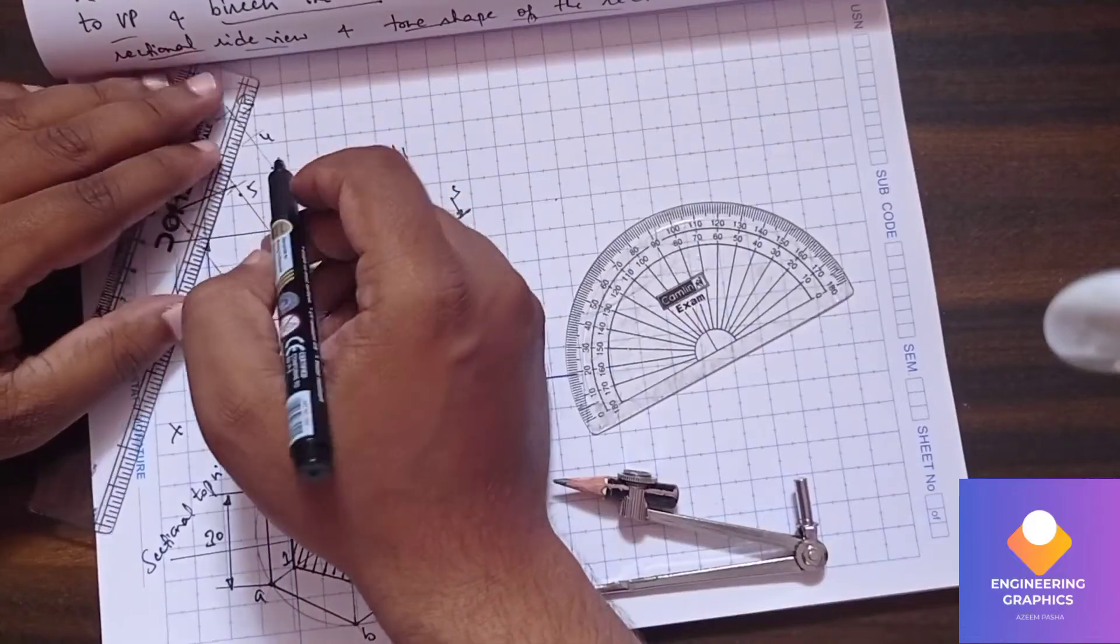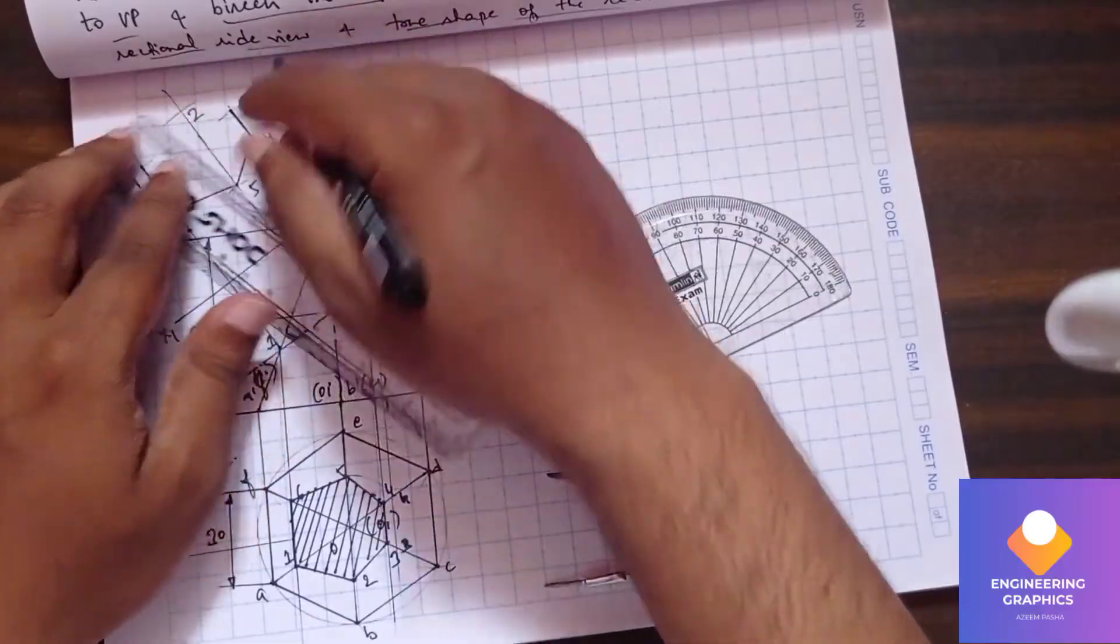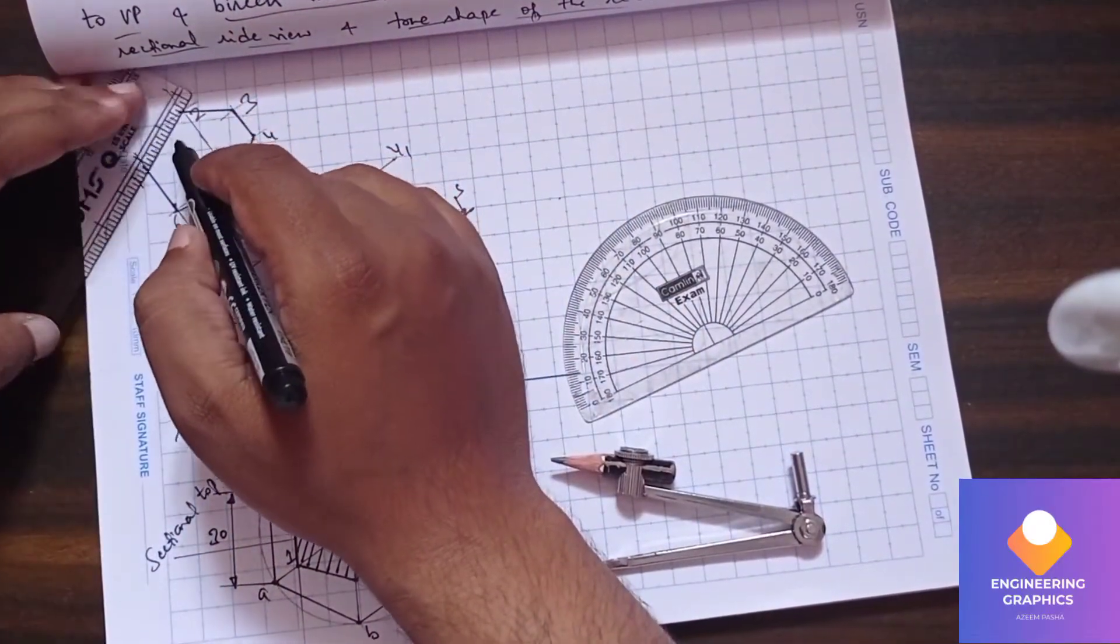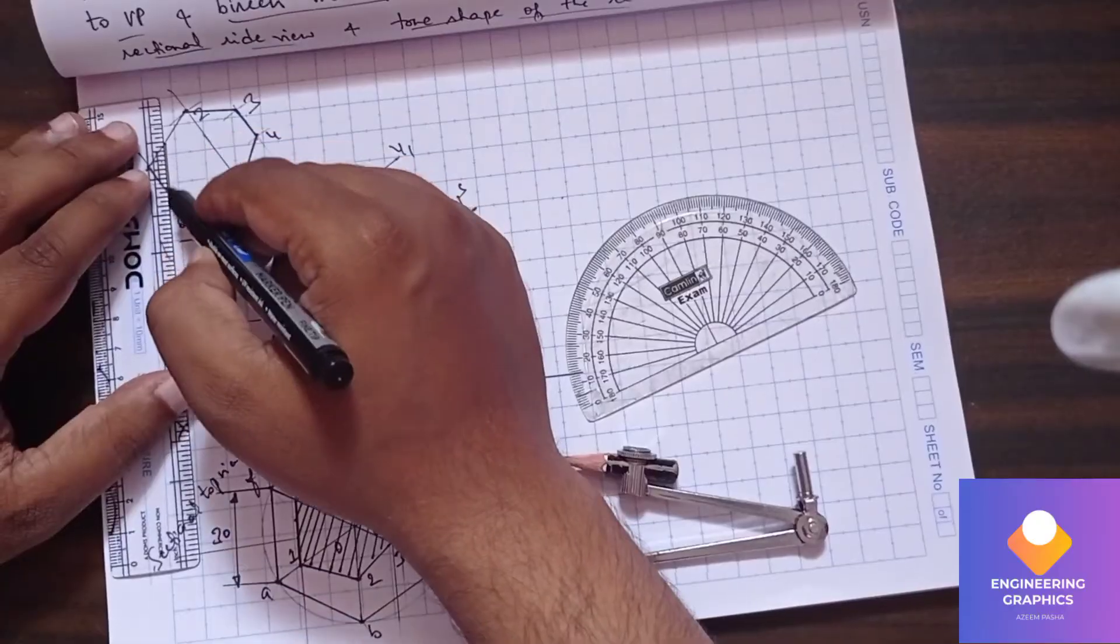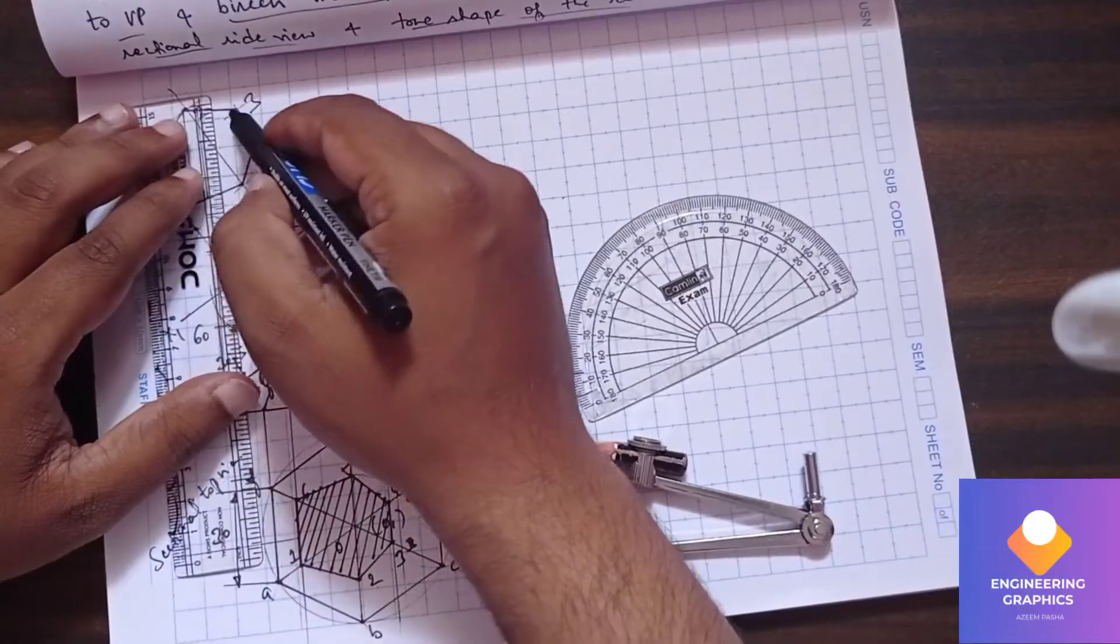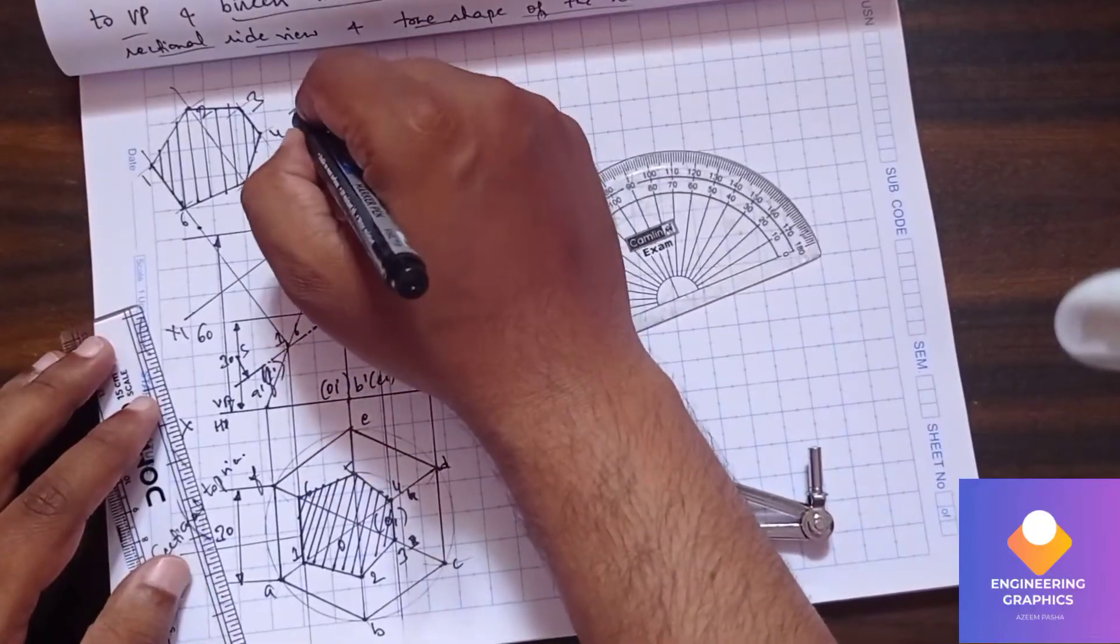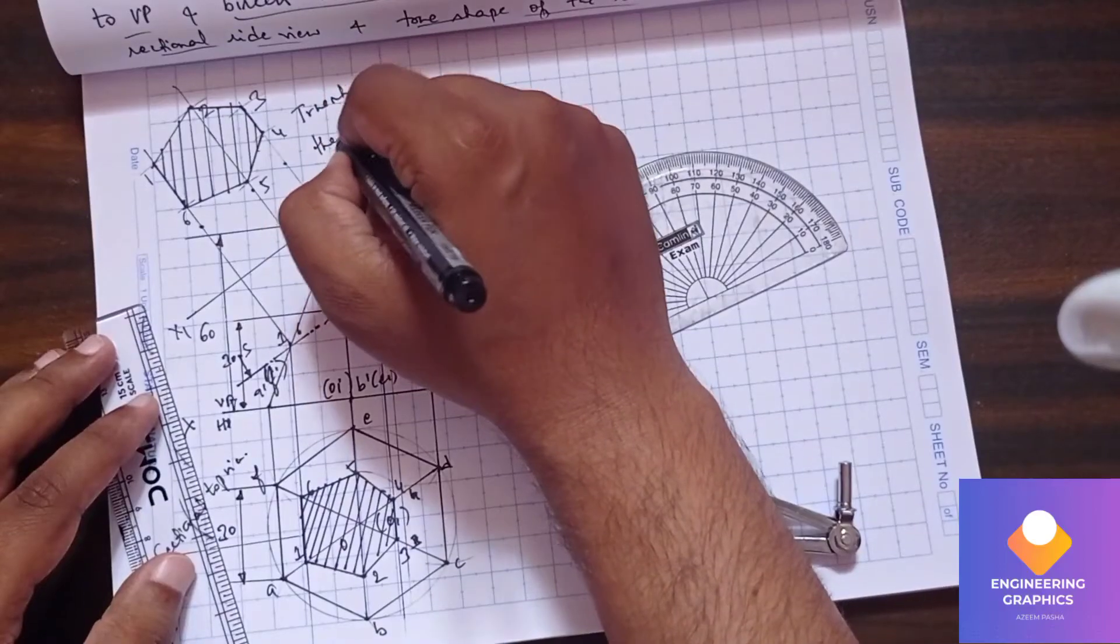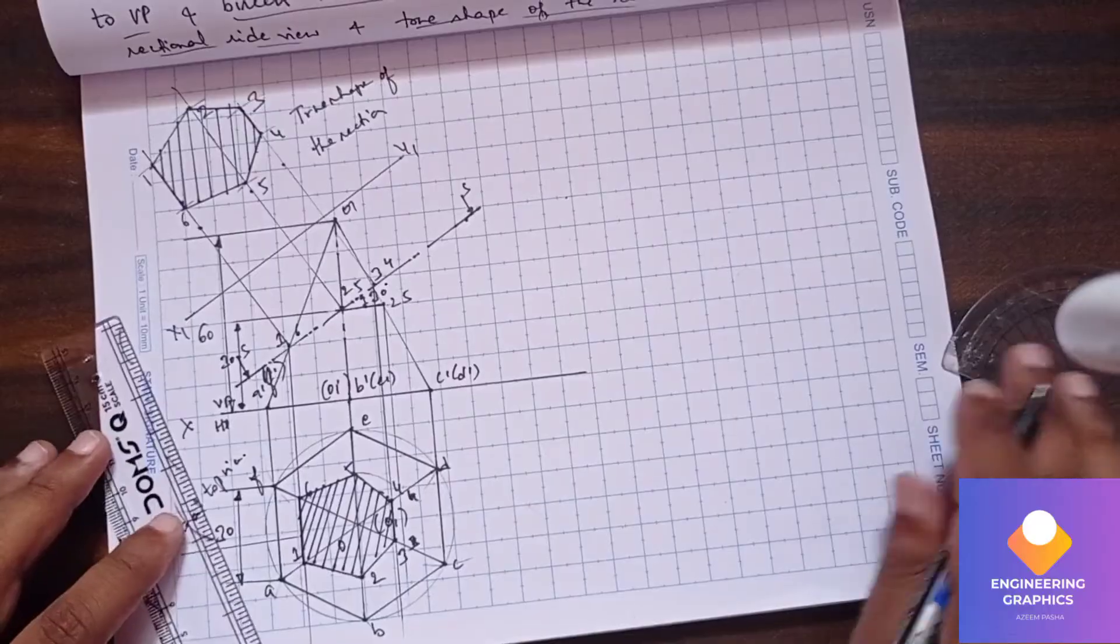I'll extend this line. There is 1, 6, 2, 5, 3, and 4. We can join them. This is our true shape of the section.